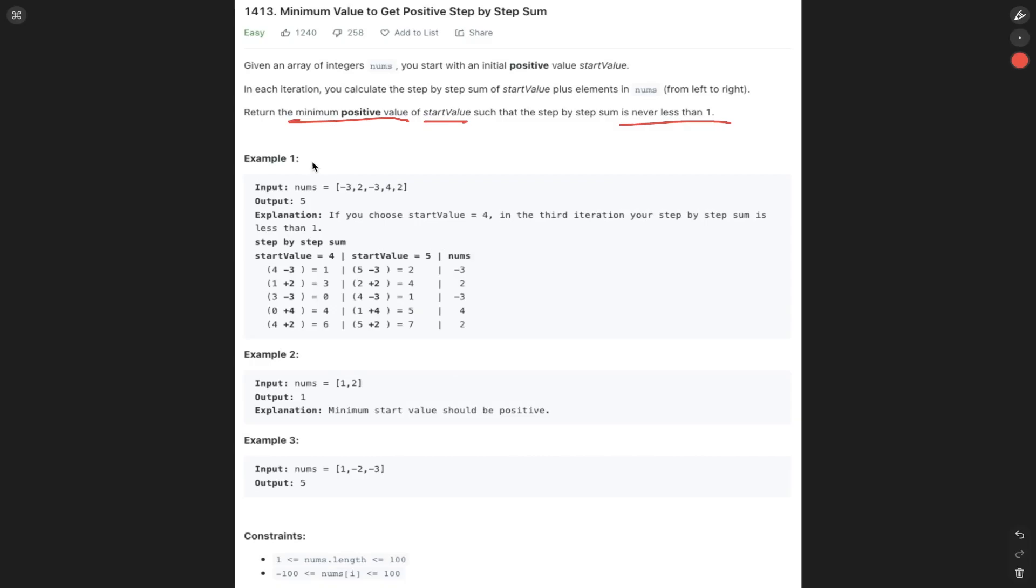Let's see what happens if we used the value of four. We subtract three from four, giving us one. We're still in bound. We add two, giving us three. We subtract three. Now we're at zero, which is less than one. So we cannot use four.